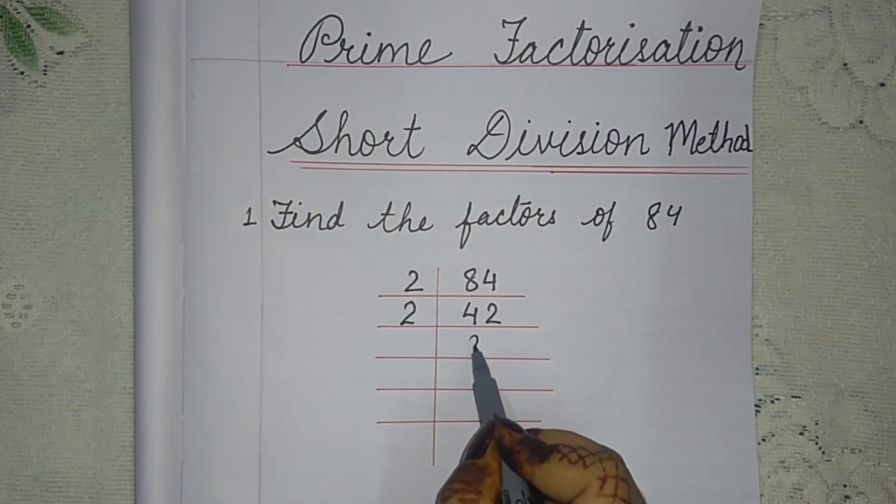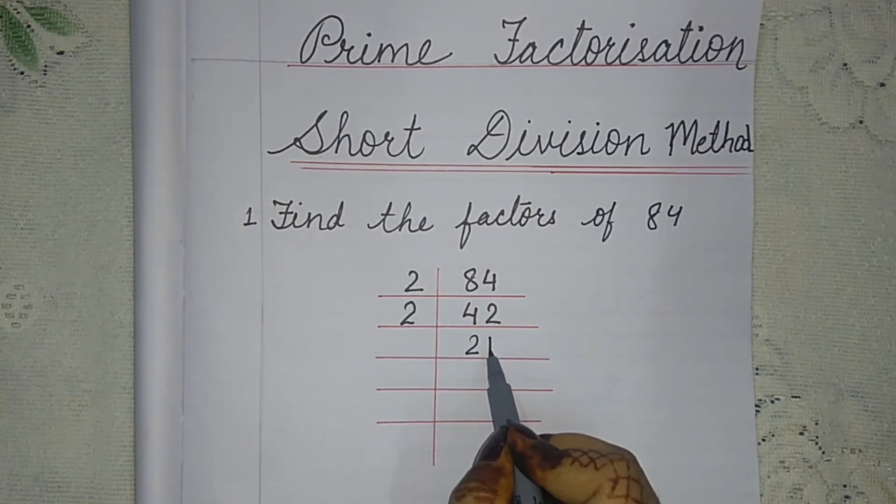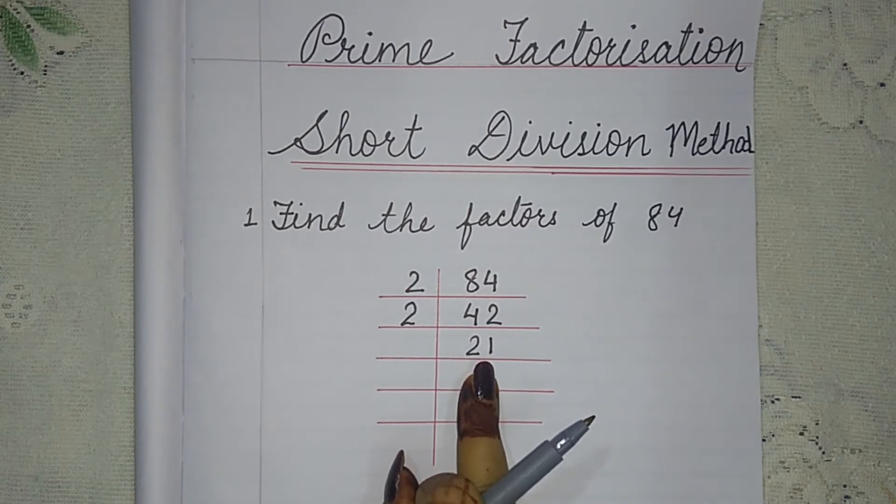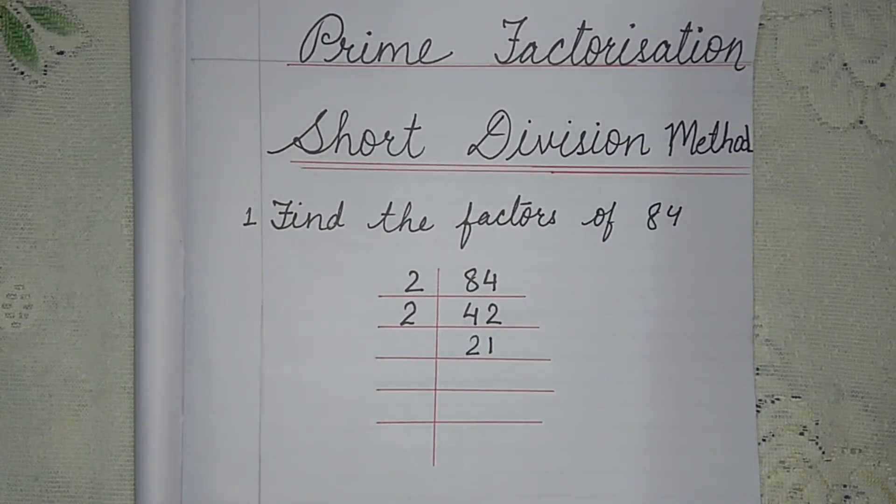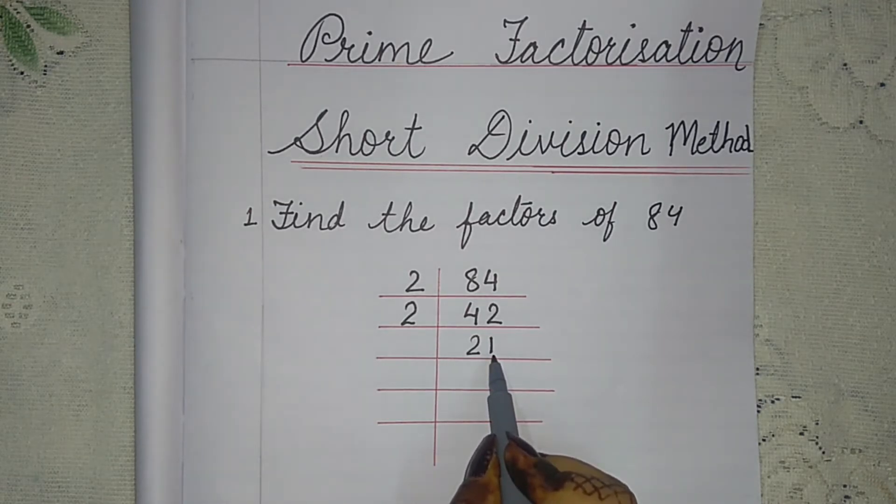When 42 is divided by 2, two twos are four and two ones. We have got the answer 21. Now is 21 an even number? No.